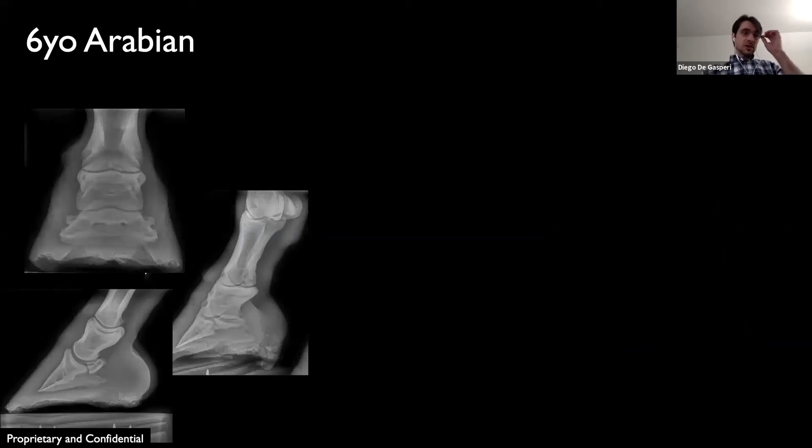Now we'll switch gears here to lesions above the foot. This was a six-year-old Arabian stallion show horse who presented with a history of chronic grade three out of five lameness localized to the right front pastern via an inter-articular block.